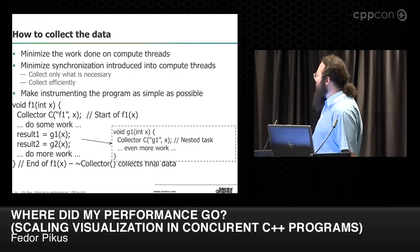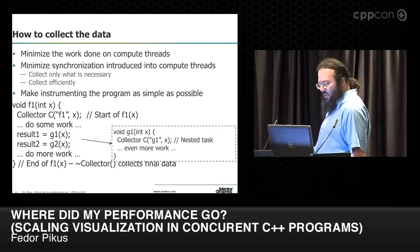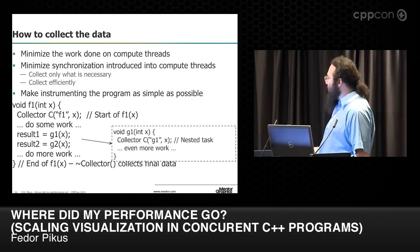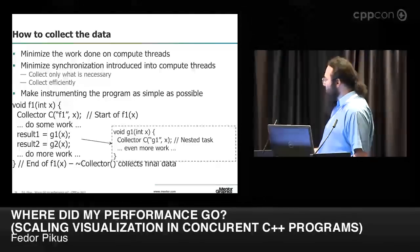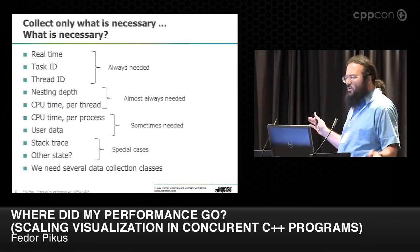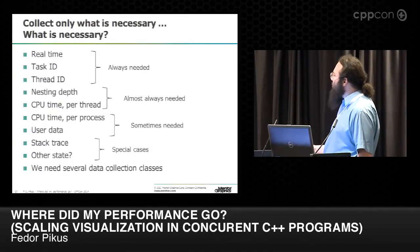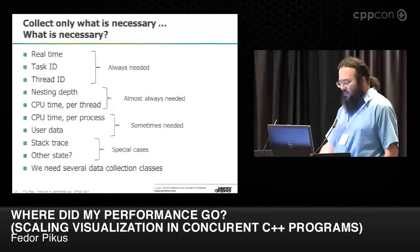The simplest way is to stick data collection objects at measurement points. I have a macro for this. Each bar on the timeline corresponds to the lifetime of one of these objects — the constructor starts the measurement, the destructor finishes it. For nested measurements, another data collector inside creates a nested bar. We always need real time, a task ID, and a thread ID. Almost always we want nesting depth, CPU time per thread, and sometimes CPU time per process, user data, or stack traces.